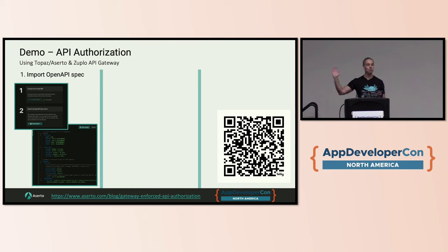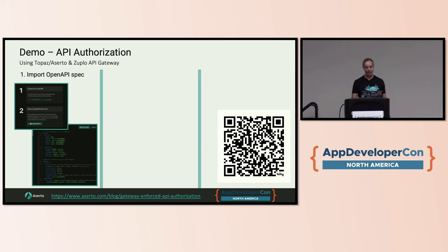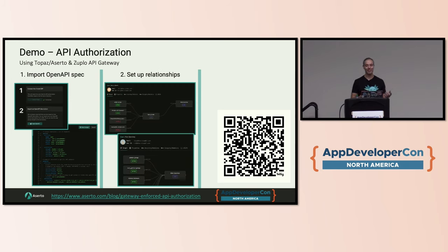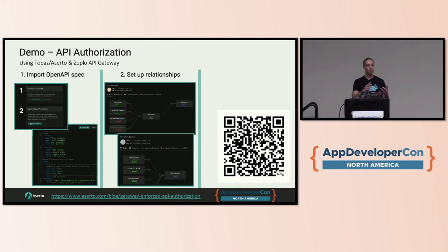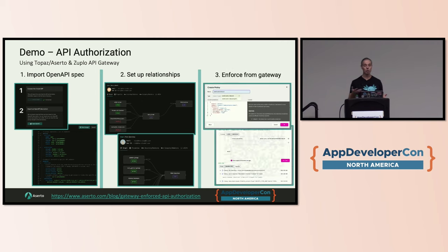I have a QR code here if people want to follow along — there's a video and a set of resources on how to do this. The first thing we're going to do is import an OpenAPI spec, which will bring in all of the endpoints and make that ReBAC relationship-based data. The second thing is set up a set of relationships — we have some protagonists: Rick is going to be the evil genius and Morty is going to be his grandson slash sidekick. We'll set up relationships that entitle users or groups to access these endpoints. And lastly, we're going to enforce from the gateway — we picked Zooplo as an API gateway. It's a modern, OpenAPI-native gateway.